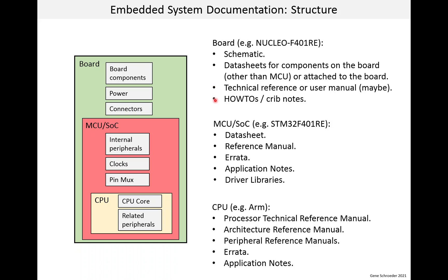Now we'll look at the specific documents for the Nucleo board used for this course — just some key documents. There are copies of these documents in the GitHub repository for this course, and that is what I'm using here. I've loaded some of the documents in separate tabs in my browser. Here I am looking at the README file for the third-party docs folder in the repo. We start at the board level with the Nucleo board. This is a commercial board versus a proprietary board you might use if working for a company, which means the documentation might be better because it is intended for a wide audience.